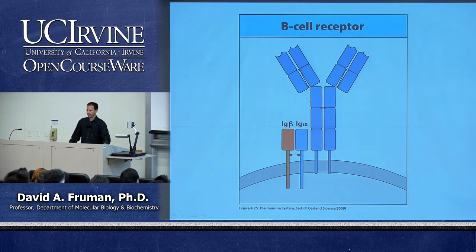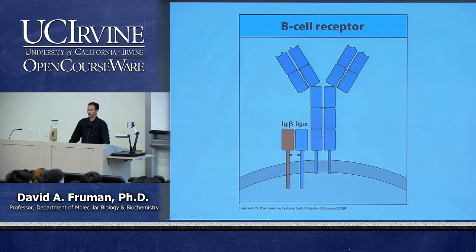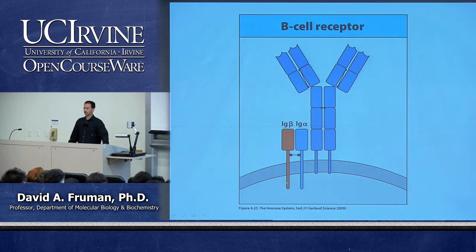Once the B cell receptor gets to the surface — in this example IgM — it associates with two proteins that are the same in all B cells: Ig alpha and Ig beta. These have two functions: they chaperone the Ig molecule to the surface of the cell (without them the B cell receptor stays in intracellular vesicles), and their longer cytoplasmic tails are involved in signaling when an antigen is bound.